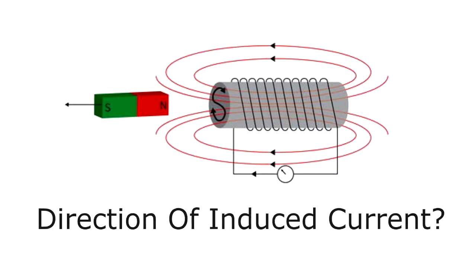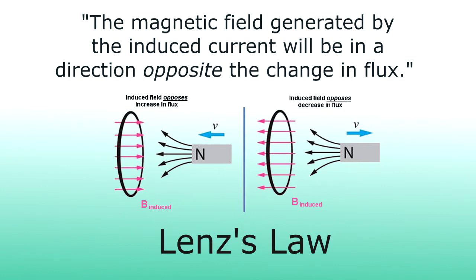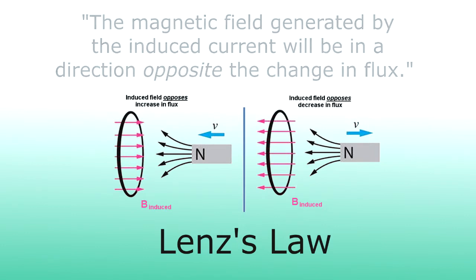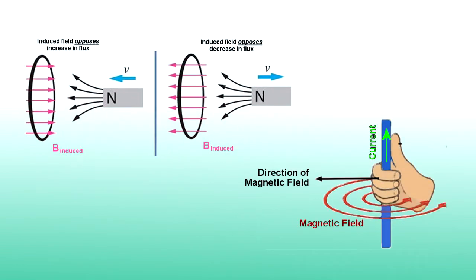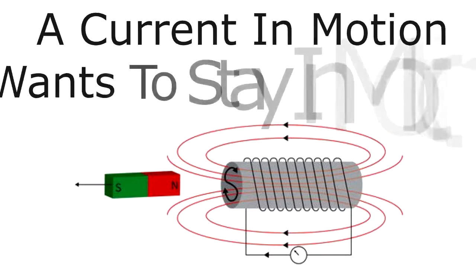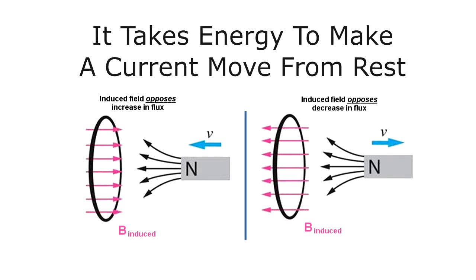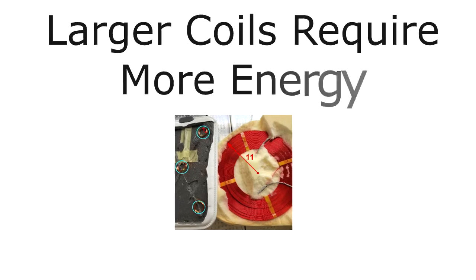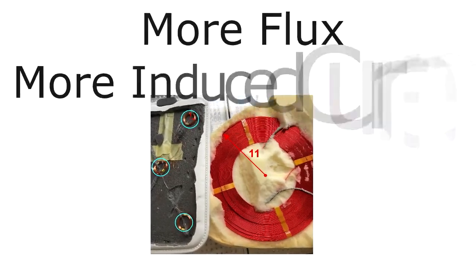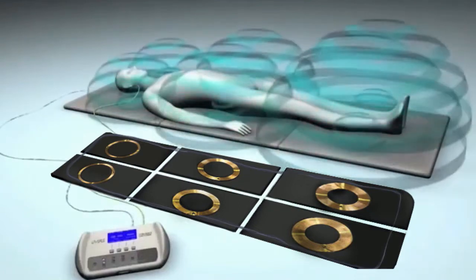So what direction will the induced current flow? To figure that out, we use Lenz's law. You know how currents generate magnetic fields? Lenz's law says the magnetic field generated by the induced current will be in the direction opposite the change in magnetic flux. So if you know the direction of change in flux, you can figure out the direction of the generated magnetic field, and then use the right-hand rule to find the direction of the current. Faraday's law is kind of an inertial phenomenon — it's hard to get a current going through induction, and equally hard to stop or reverse it. Larger coils require more energy because there's more magnetic flux, and hence more induced current. So in PMF devices, larger coils will have a much greater effect than smaller coils for a given field strength.